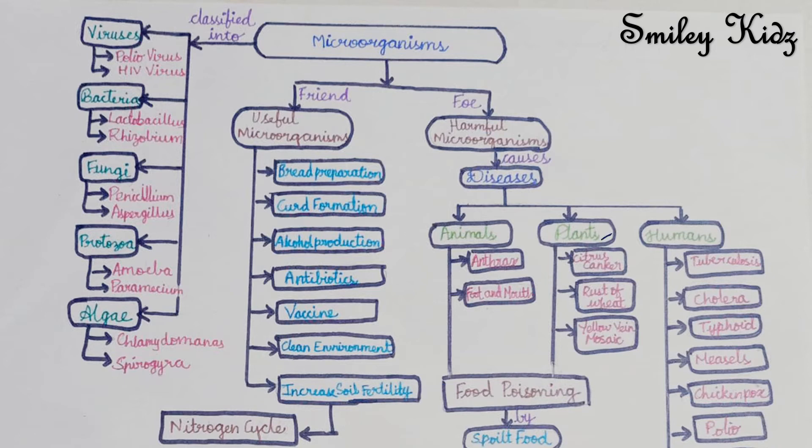Plant diseases: at first we have citrus canker which is caused by bacteria. Rust of wheat is caused by fungi. Next we have yellow vein mosaic of bhindi or okra plant which is caused by virus. All these can be controlled by the use of certain chemicals which kill the microbes.